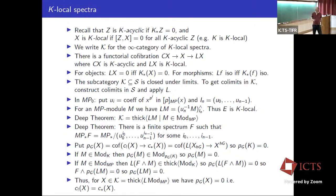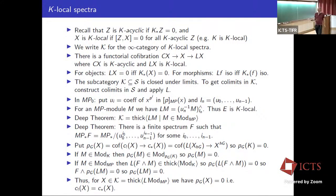That's the ambidexterity theorem for ordinary group orbits. The rest of the lecture we'll try to do it for infinity group orbits.